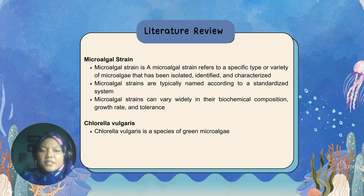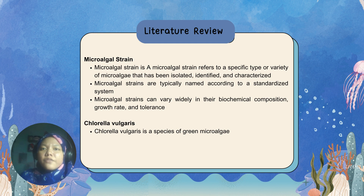Next is Chlorella sorokiniana. Chlorella sorokiniana is a specific species of green micro-algae which is cultivated widely and is widely studied for its potential applications in food, feed, biofuel, and biomedicine.